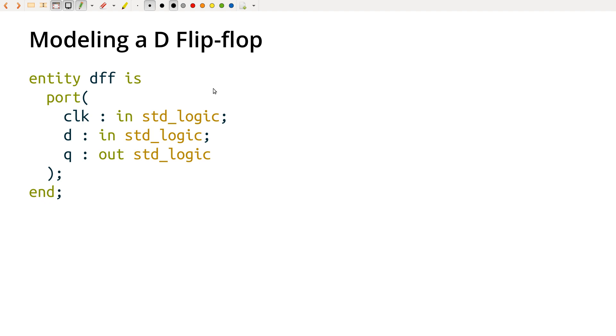So the entity part is relatively straightforward. We've got an entity, and it's got three ports, so we've got clock, data, and Q, and all of those are just standard logic, they're single bits. And clock and data, of course, are inputs. Q or output is defined as an output.